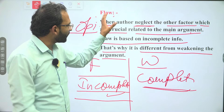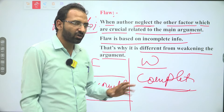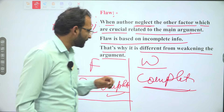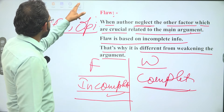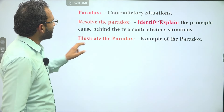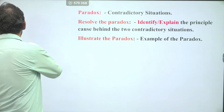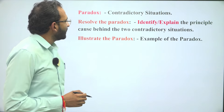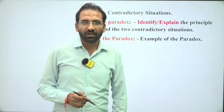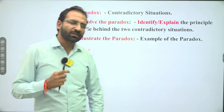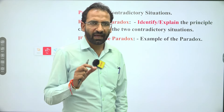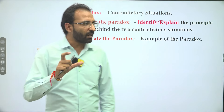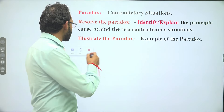I hope you now understand the difference between flaw and weakening the argument. Let's come to the next point: Paradox. This is the last point of this slide. Paradox means the contradictory situation.